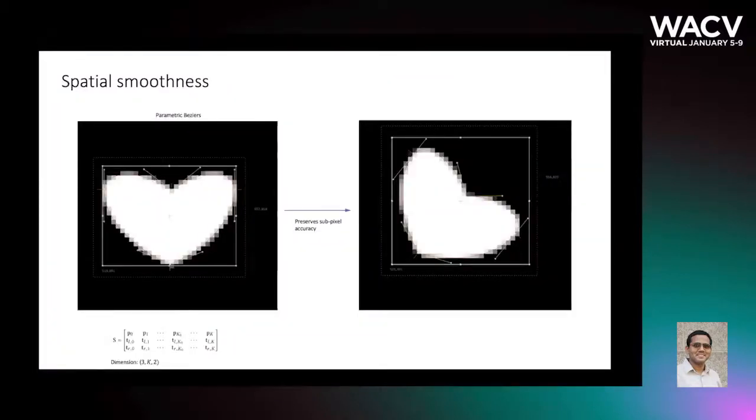The goal here is to learn and accurately predict multiple shapes, open and closed, in relation to the image, while ensuring spatial smoothness and temporal coherence. We adopt the parametric Bézier representation for the shapes, with points and tangents, which ensure spatial smoothness and preserve sub-pixel accuracy under transformations.